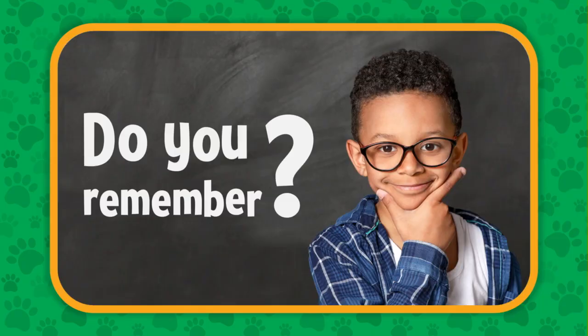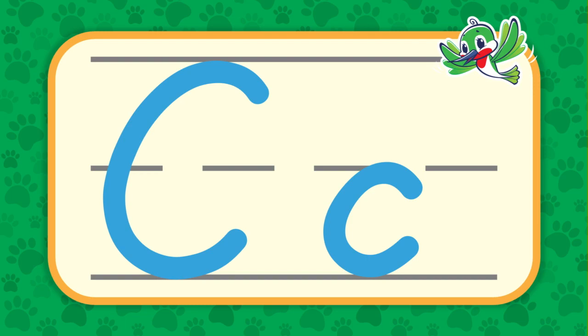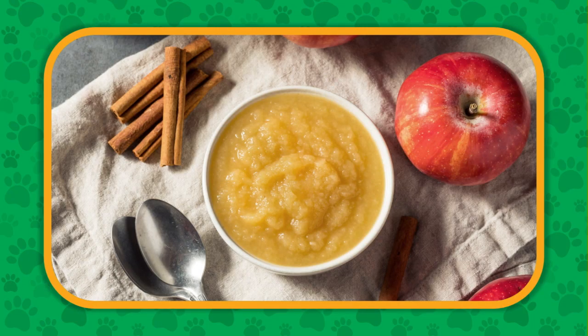It's time for review. Do you remember? Which word starts with the K sound — a camel, a pie, or a dog? Camel starts with the K sound. Do lowercase and uppercase C look alike? Yes, lowercase C is just smaller. What fruit do you use to make applesauce? Apples make applesauce. Applesauce is made fresh in the fall when the apples ripen on the trees.